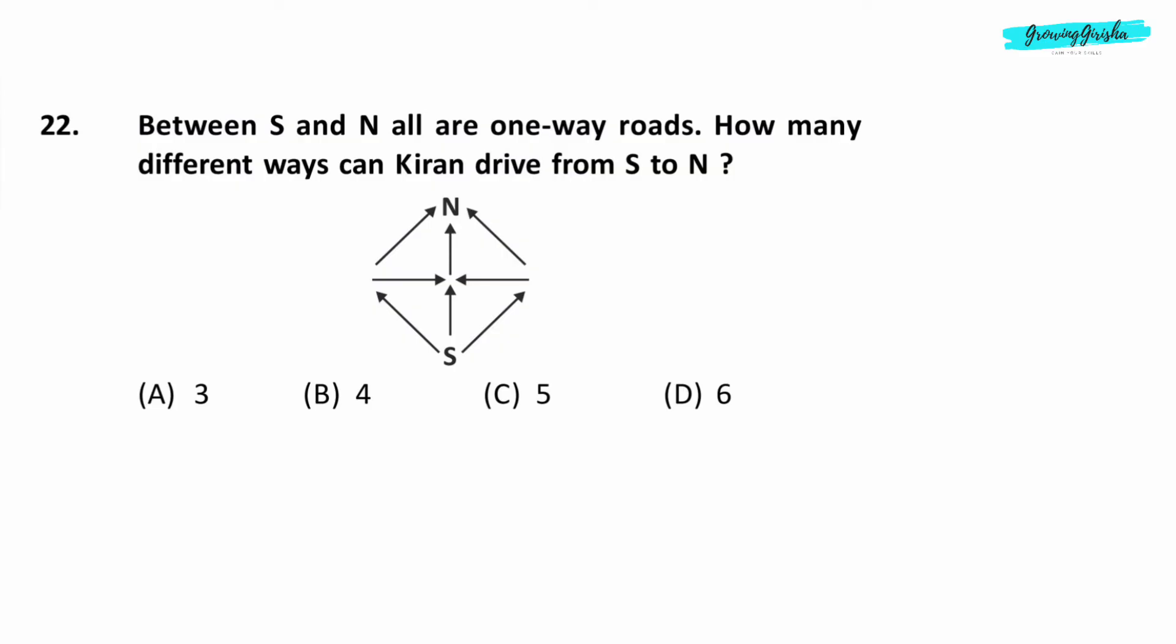Question 22. Between S and N, all are one-way roads. How many different ways can current drive from S to N? Option C. 5.